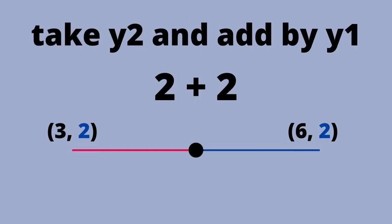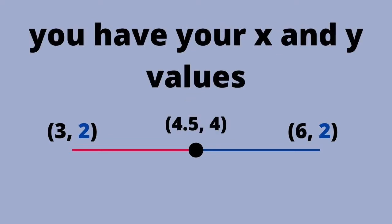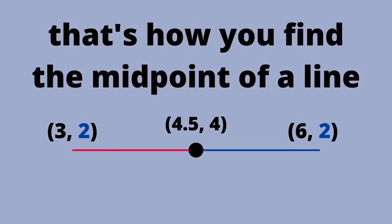Take y2 and add by y1, then divide by 2. You have your x and y values, and that's how you find the midpoint of the line.